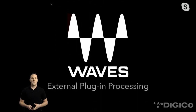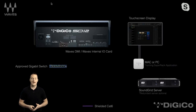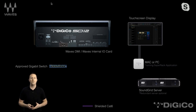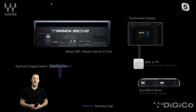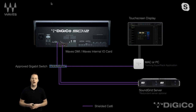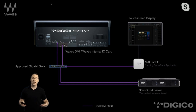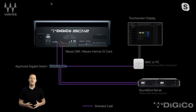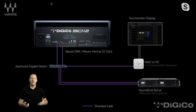Now on to Waves. Waves is external audio processing. Here we have a Digico SD12 with a Waves DMI card in it, a SoundGrid server — in this case a redundant server — and a Mac or PC running the Super Rack or Multi Rack application with a touchscreen. We wire everything up through an approved gigabit switch from Waves. There are actually two lines going to the SD12: one goes to the DMI card for audio, and the second connection goes to the Digico control port — this is how we integrate them together.